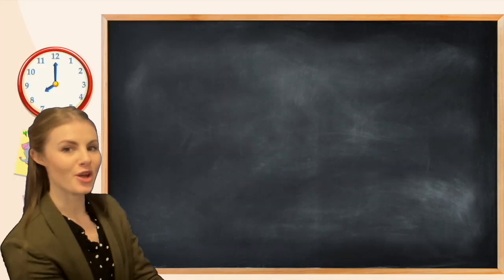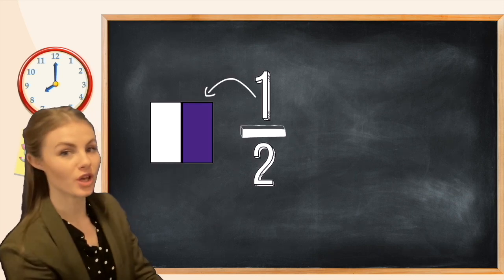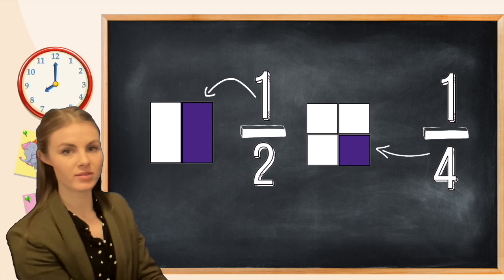So we already know that to find a half we split something into two equal parts, and to find a quarter we split something into four equal parts.